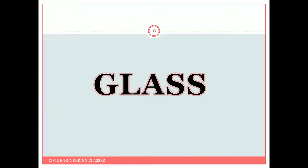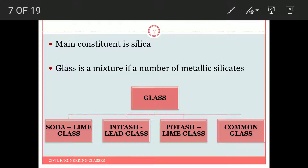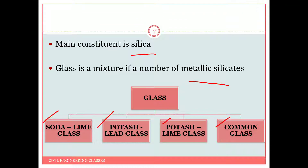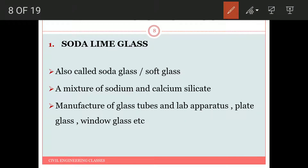Moving to the next building material — glass. The major constituent of glass is silica. Glass is a mixture of a number of metallic silicates. Glass can be classified into soda lime glass, potash lead glass, potash lime glass, and common glass. Soda lime glass, also called soda glass, is comparatively soft. It is a mixture of sodium and calcium silicate, majorly used for glass tubes, lab apparatus, plate glass, and window glass.